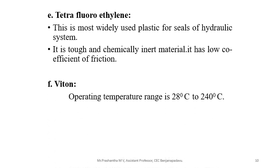Viton: its operating temperature range is 28°C to 240°C. It is an elastomer-type seal and is most widely used at elevated temperatures up to 240°C. These seals are more rigid and are often used as wiper or scraper seals on cylinders.